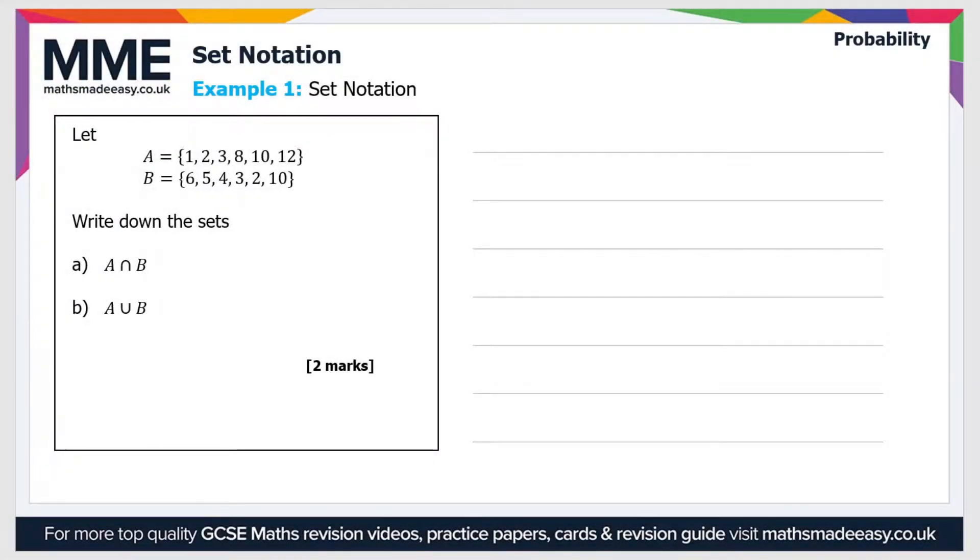Welcome to the Maths Made Easy tutorial on set notation. This is the final video on this topic and in this video we'll just be covering some examples. So the first one: let A equal the set {1, 2, 3, 8, 10, 12} and B is the set {6, 5, 4, 3, 2, 10}. Write down the sets A and B.